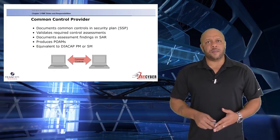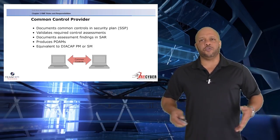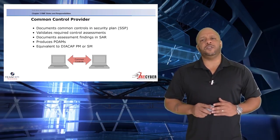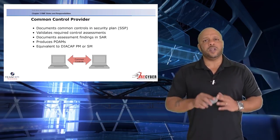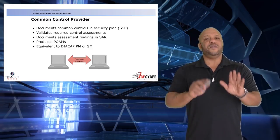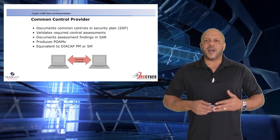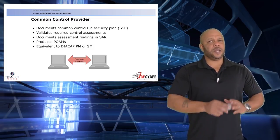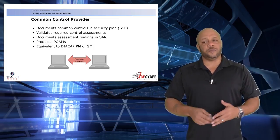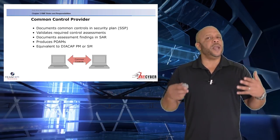Next, the common controls provider. A common way to identify a common control: where your administrative control ends — when you can no longer control the input or output on that system administratively — that is being provided by a common control provider. That is how you identify common controls versus the controls you, as the information system owner or the information security officer, are required to maintain.